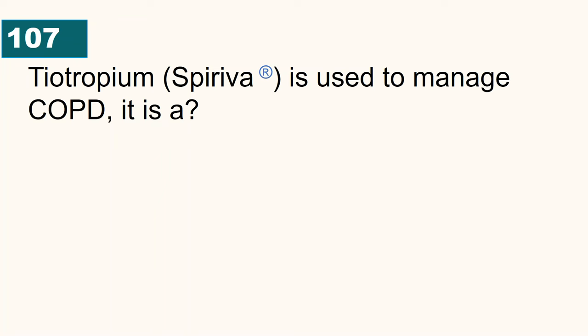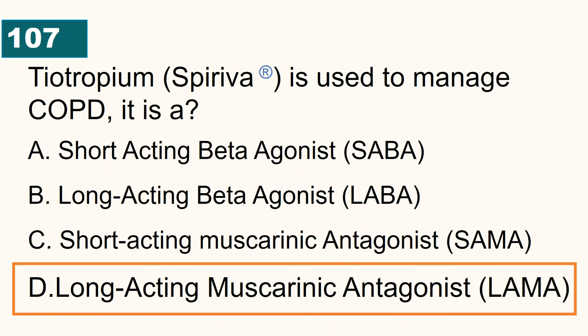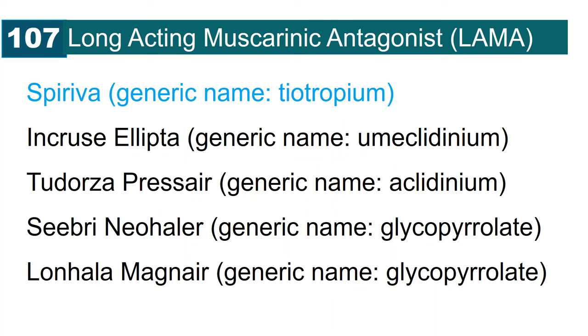Tiotropium brand Spiriva is used to manage COPD. What class of drug is this? It is a long-acting muscarinic antagonist, also known as LAMA. Examples of LAMA drugs include Spiriva (tiotropium), umeclidinium in Incruse Ellipta, aclidinium Tudorza Pressair, and glycopyrrolate brand Seebri Neohaler.